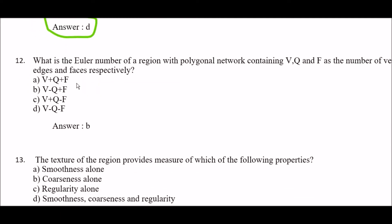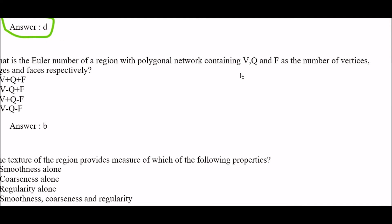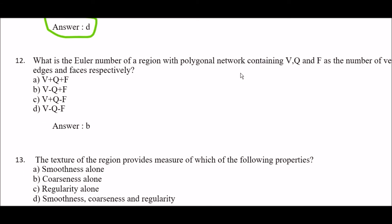Next question: what is the Euler number of a region with a polygonal network containing V, Q, and F as the number of vertices, edges, and faces respectively? Option A: V plus Q plus F, option B: V minus Q plus F, option C: V plus Q minus F, option D: V minus Q minus F. The right answer is option B — V minus Q plus F.